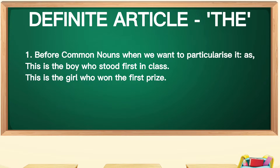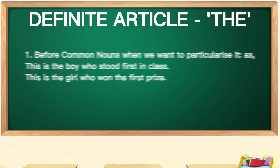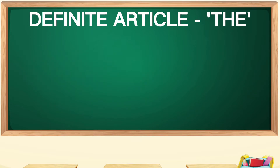For example: 'This is the boy who stood first in class.' 'This is the girl who won the first prize.' The first time we say 'a boy', but the second time we say 'the boy', 'the girl'.